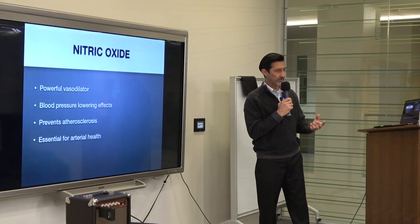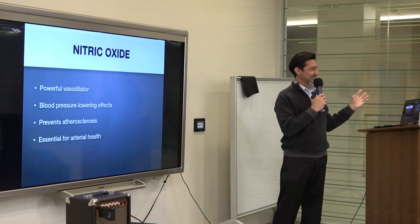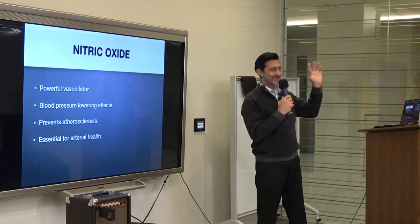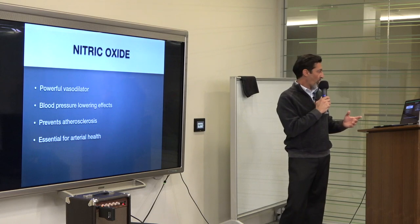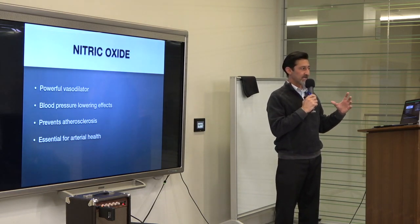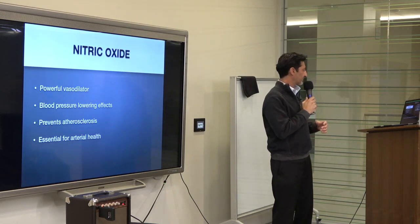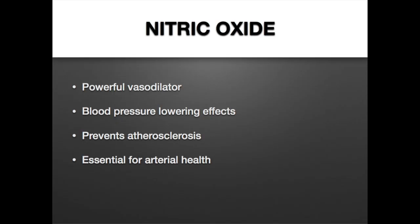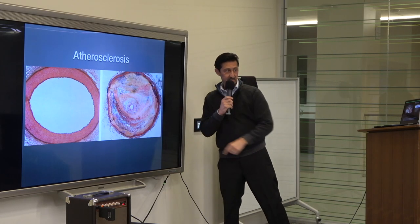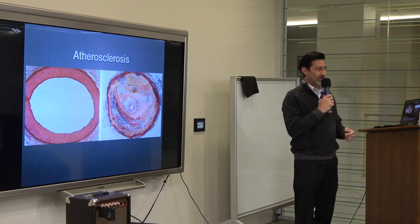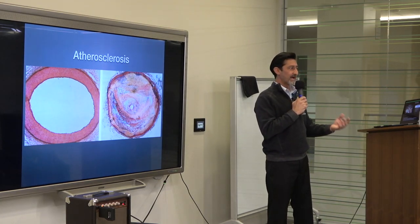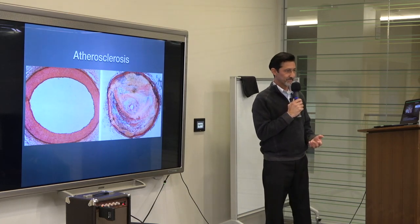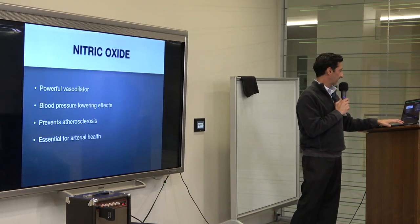The endothelium also makes nitric oxide. Nitric oxide is a very important molecule. When the endothelium is destroyed, the natural function of the artery is markedly impaired. If you look at the picture on the right, there is no endothelium, so this artery is a poorly functioning artery. Nitric oxide is the most important molecule - I think it's the most important molecule in the body, but I'm biased because I'm a vascular surgeon. It's a powerful vasodilator, it helps arteries expand when you need more blood flow. It has tremendous blood pressure lowering effects. Importantly, it prevents atherosclerosis. It's essential for arterial health.